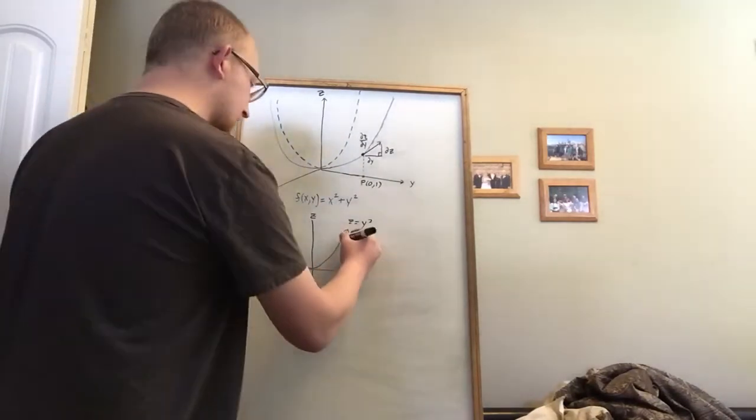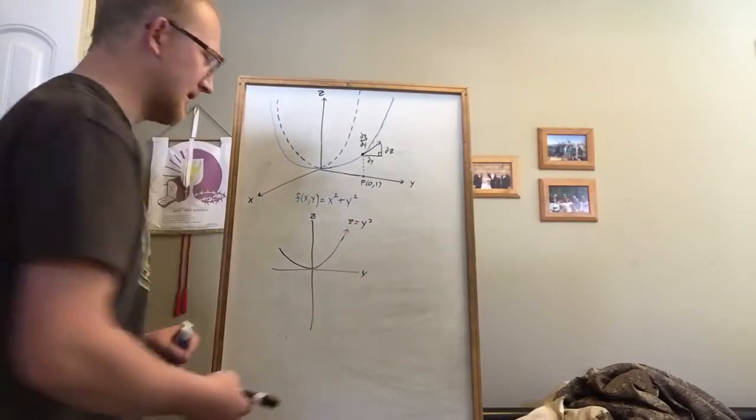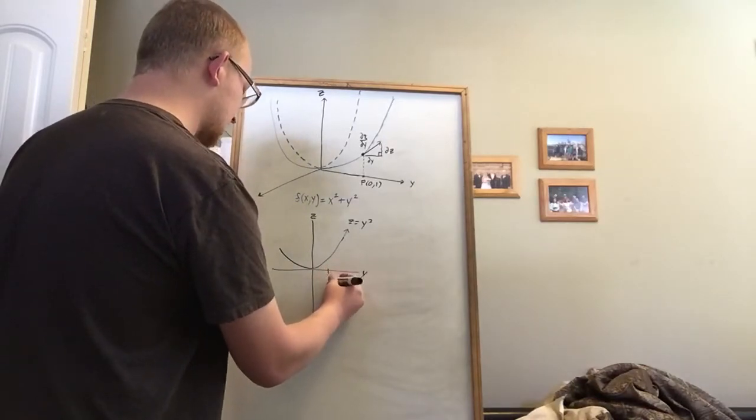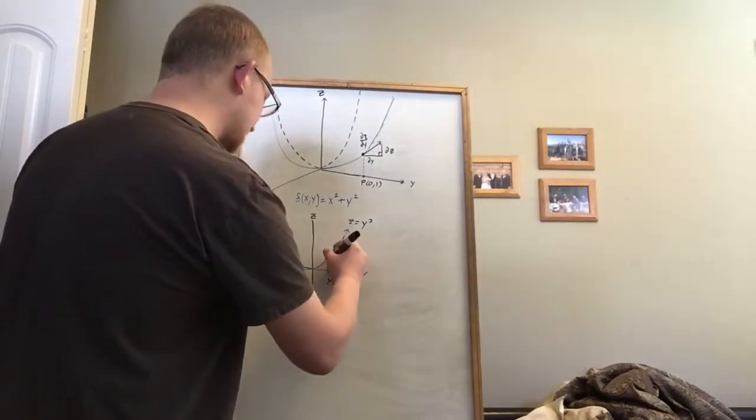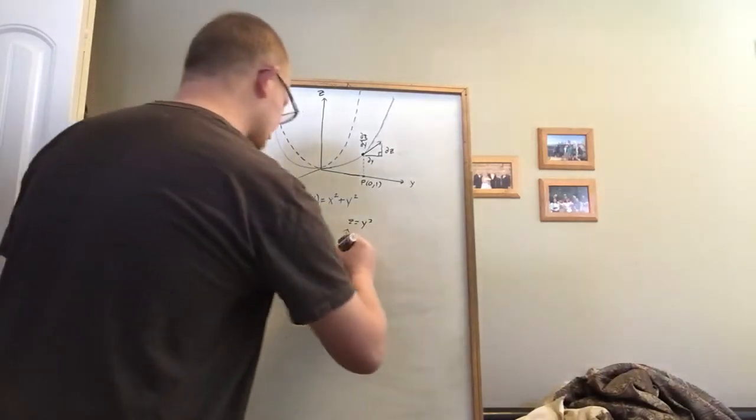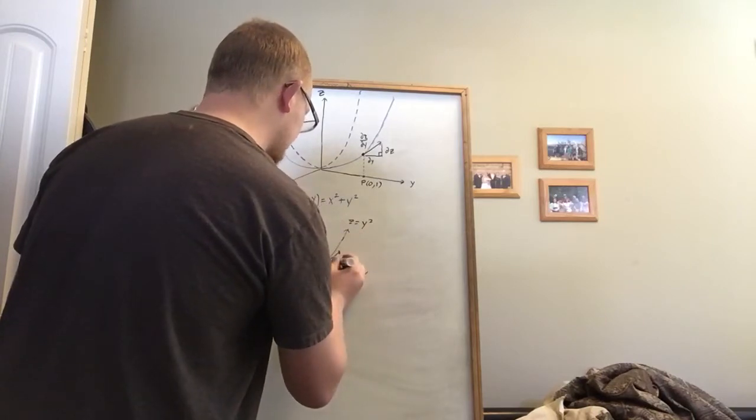Now, when we found a derivative, we always kind of imagined that we were finding the tangent line. So for example, let's say that I wanted to find what the derivative is when y equals one. We would draw it like this.